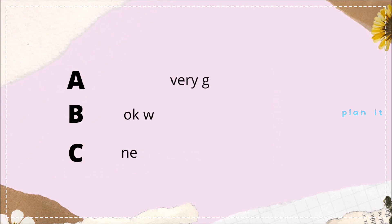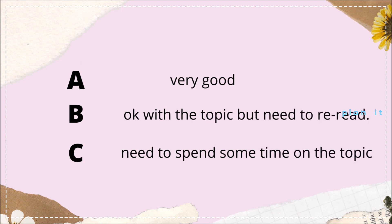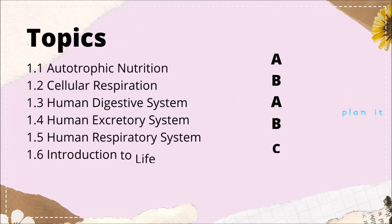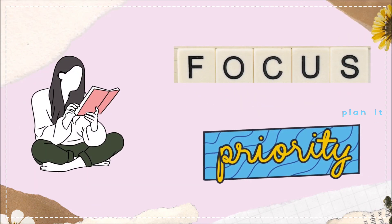A means you are very good at the topic. B means you are okay with it but need to re-read. C means you need to spend some time on that topic. Now you know which topics to prioritize and can plan accordingly. Likewise, do this for all subjects — so the problem of which one to read, which one to focus on, and which one to prioritize is sorted.